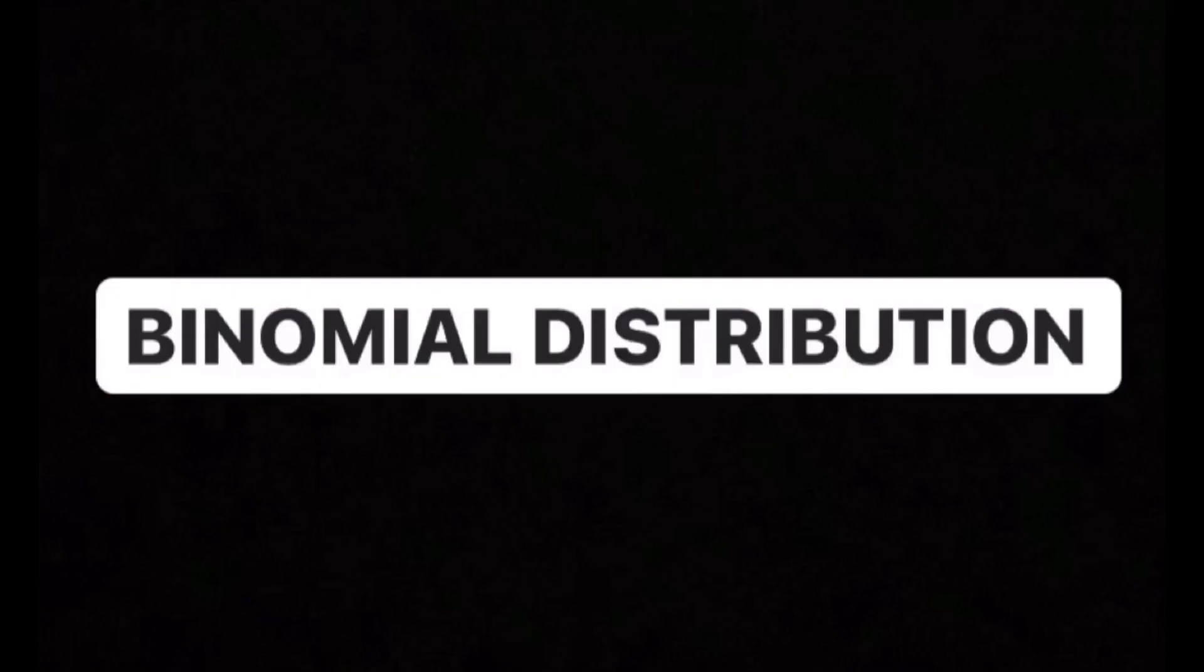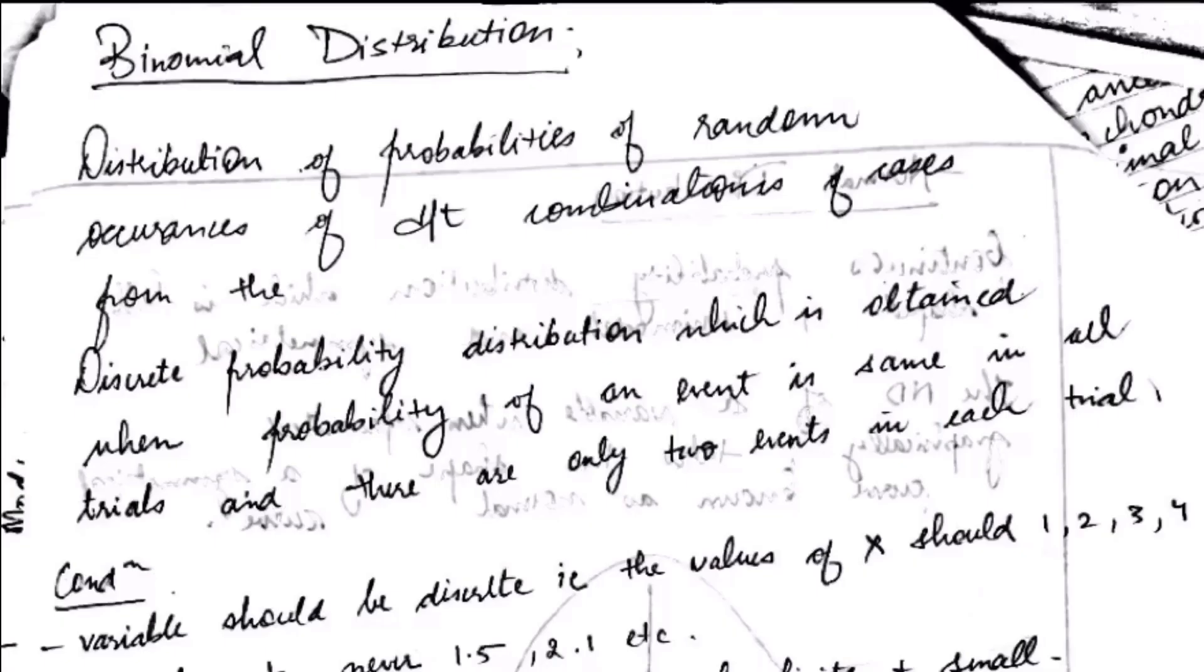Next is binomial distribution. The word binomial, that is bi, means two or twice. It is simply the probability of a success or failure outcome in an experiment or survey that is repeated multiple times. The distribution that has two possible outcomes is called binomial distribution.